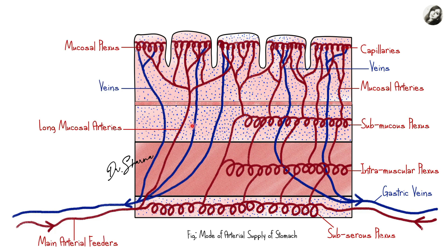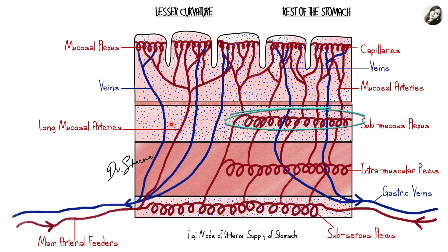Importantly, the submucosal plexus is absent along the lesser curvature of the stomach. The left side of the diagram represents the lesser curvature and the right represents the rest of the stomach — we are comparing these two portions. Along the lesser curvature, the long slender mucosal vessels arise directly from the main arterial feeders, piercing the stomach's muscular layer obliquely, and then reaching the mucosa where they form the mucosal plexus and drain back into the veins. There is no submucosal plexus here — only one long artery arising directly from the main artery and reaching the mucosa.